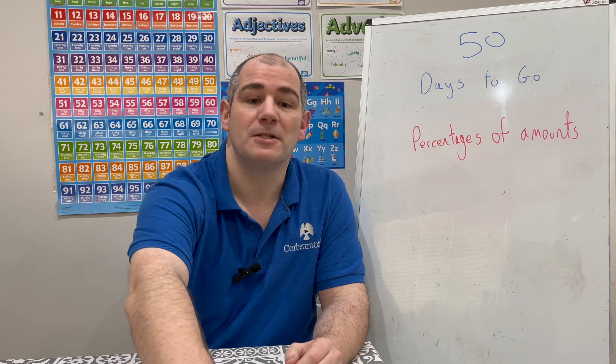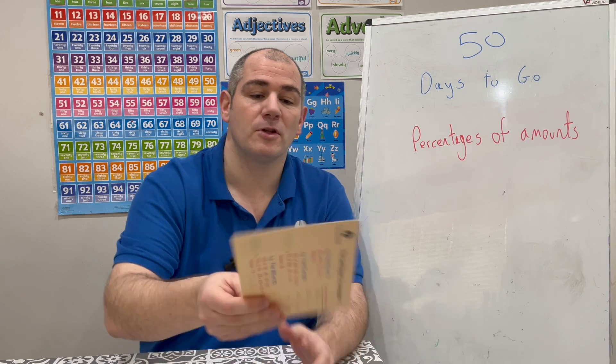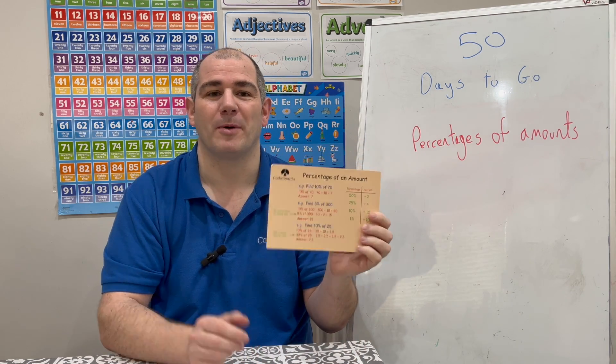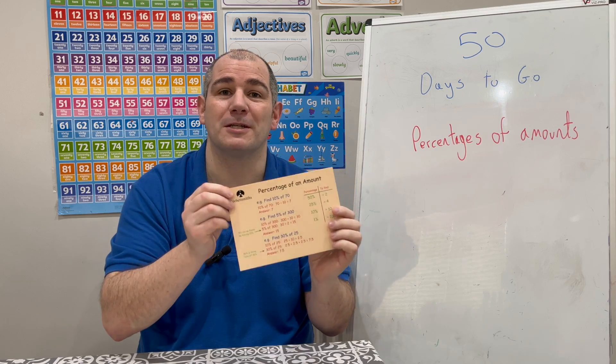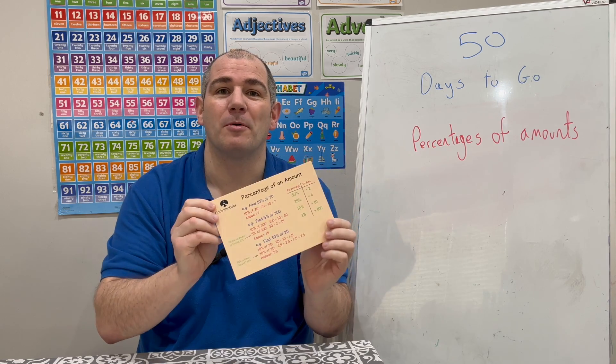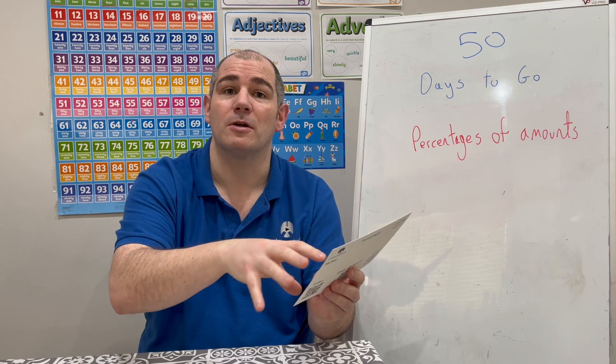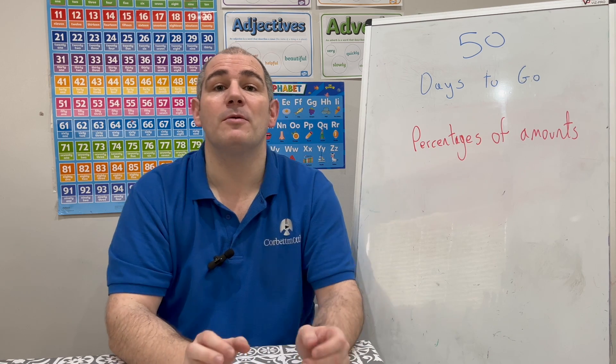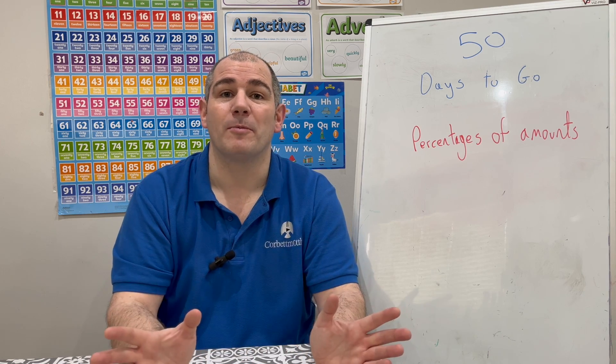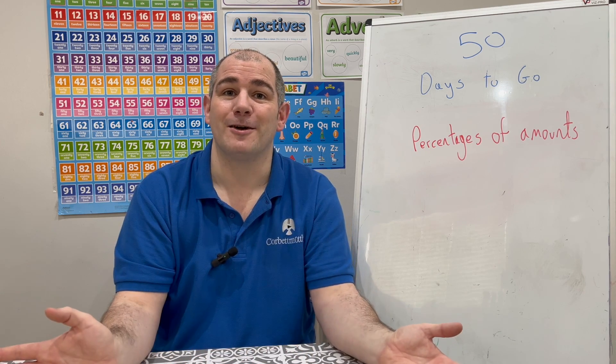In this video, we're going to be looking at percentages of amounts. If you've got the corporate marriage revision card, there's a revision card on percentages of amounts as well — card number 62. That's a very important one. It goes through how to find percentages of amounts and the key building blocks. Let's get started.